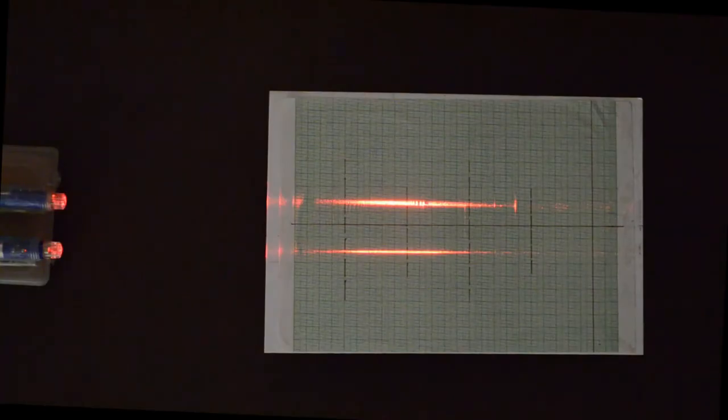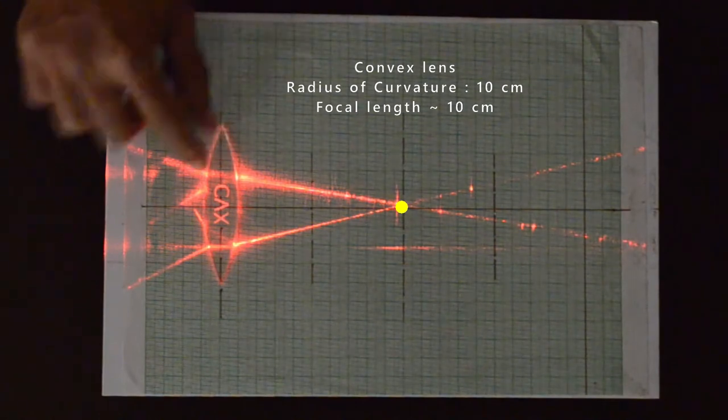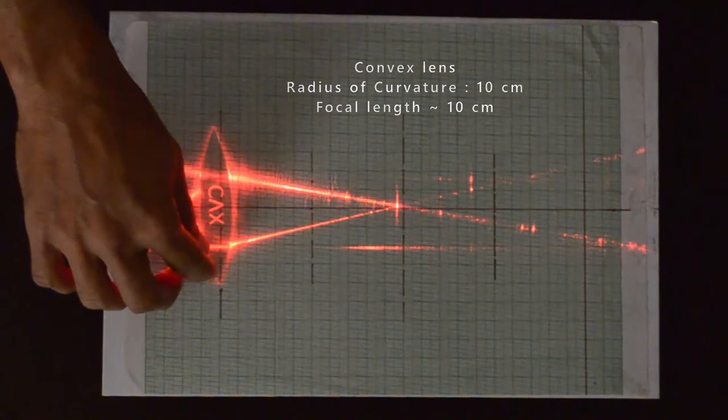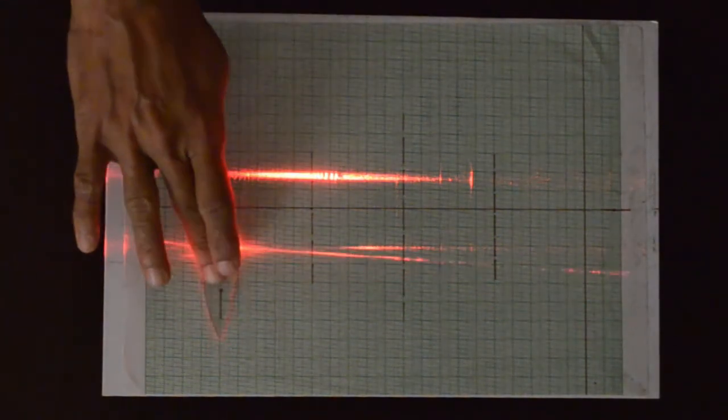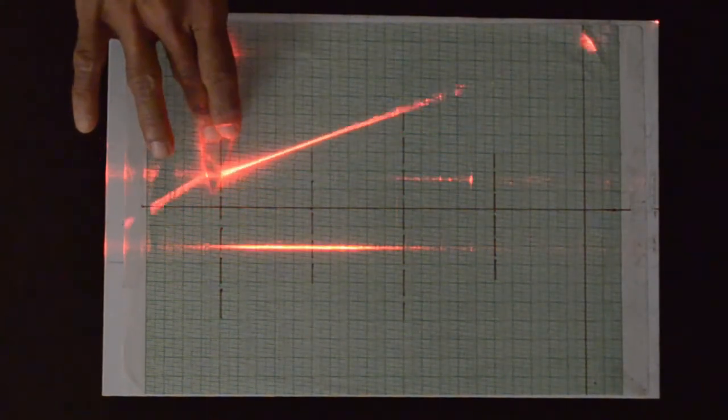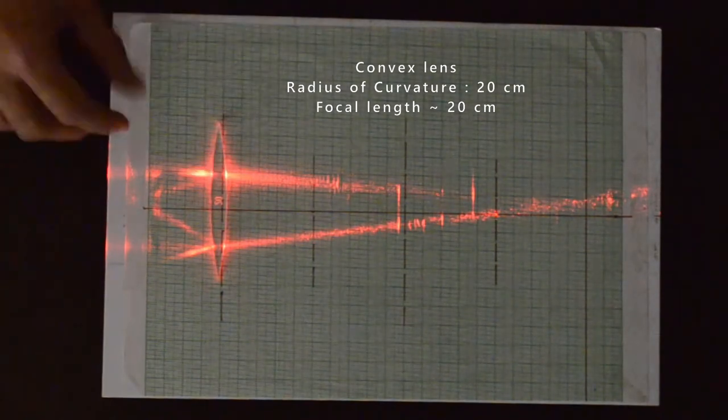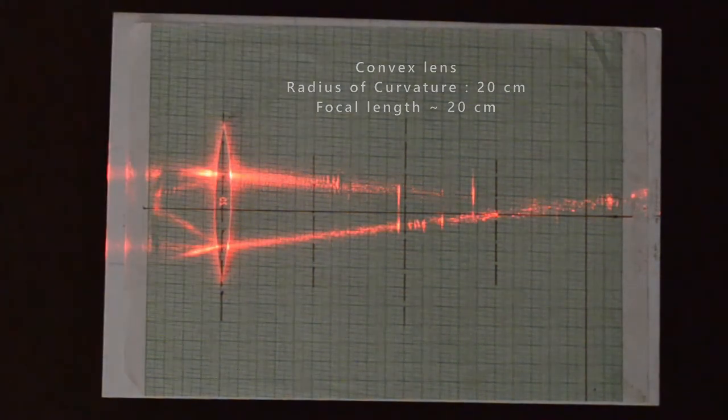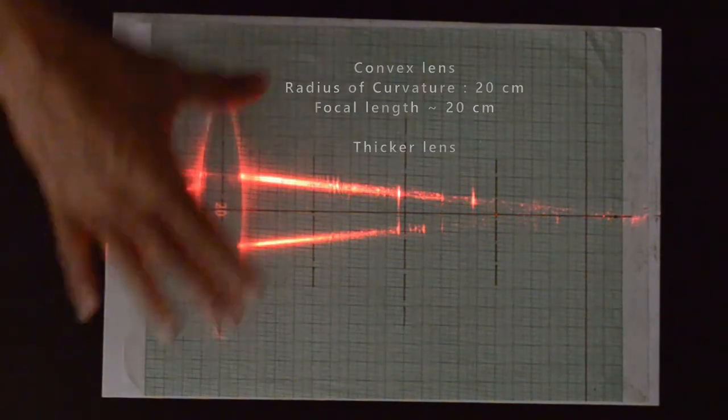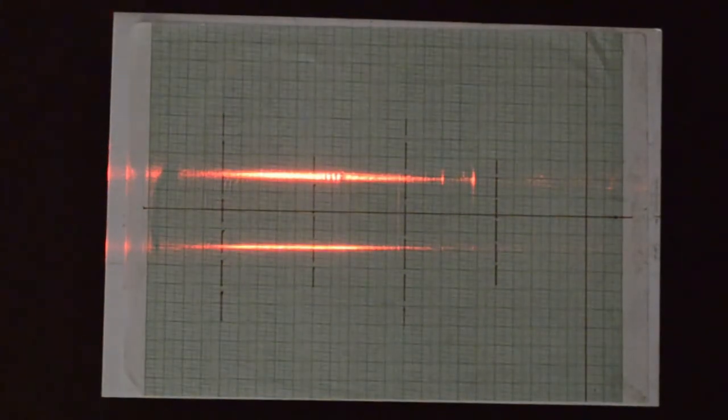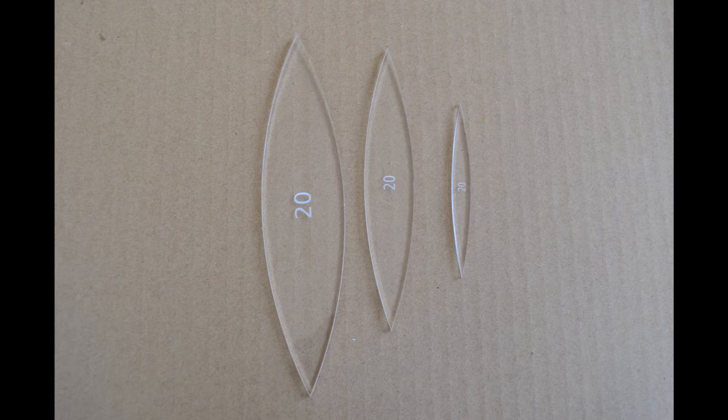Let us look at variations in type and size of the lens. Let us see how the path of refracted ray changes as I move the lens perpendicular to the incident ray. This convex lens is of the same radius of curvature as the previous one, but it is thicker. The focal length doesn't change significantly when thickness of the lens varies for the same radius of curvature.